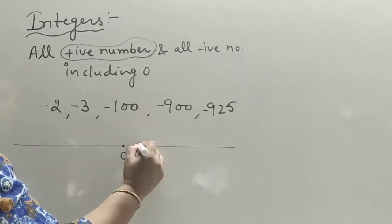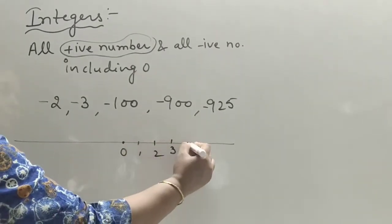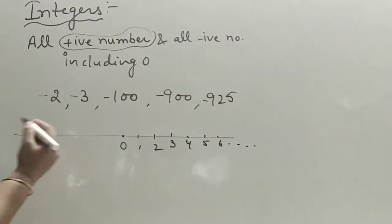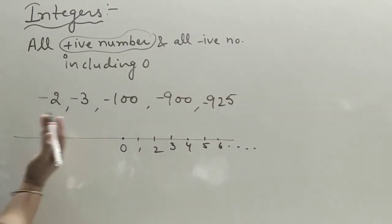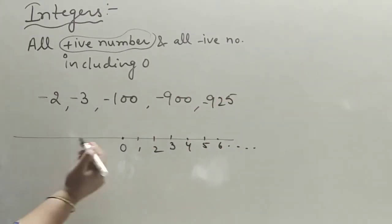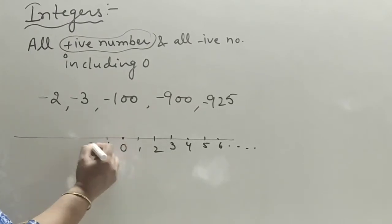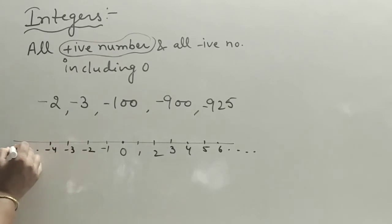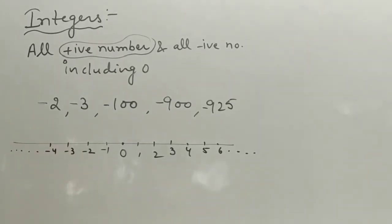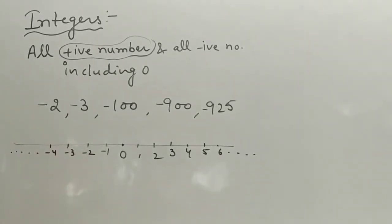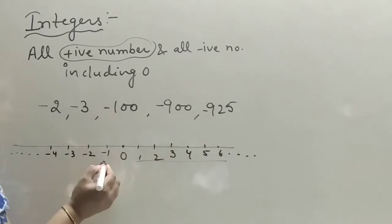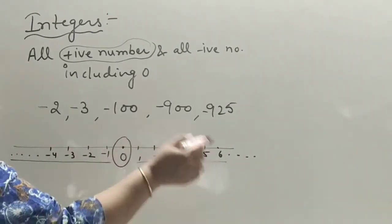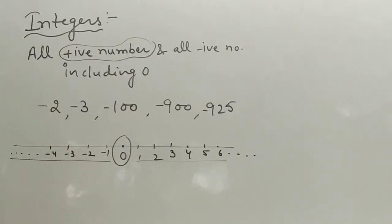On the right side of the number line, all positive numbers are there, going up to positive infinite. On the left side, these are negative numbers, starting with minus 1, minus 2, minus 3, minus 4, up to minus infinite. So all of these — positive, negative, and zero — are called integers.